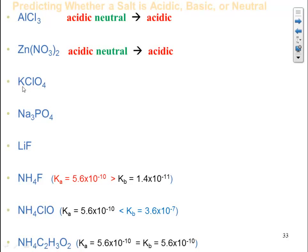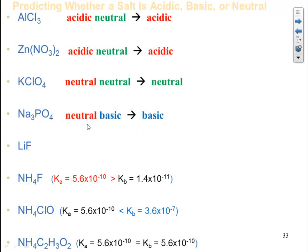Potassium chlorate: Is potassium one of the neutral cations? Yes. Is chlorate one of the neutral anions we memorized? Yes. With a neutral cation and a neutral anion, the overall salt is neutral. For sodium phosphate: Is sodium one of the neutral cations? Yes. Is phosphate one of the neutral anions? No — therefore it adds basicity. With a neutral cation and a basic anion, the overall salt is basic.